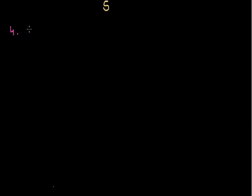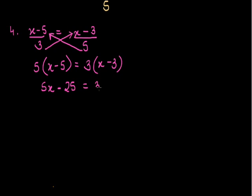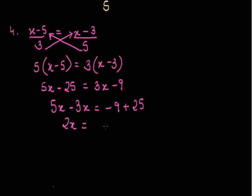The fourth question: x minus 5 upon 3 is equal to x minus 3 upon 5. Calculate the value of x in this question. Now what I can do is use cross multiplication — multiply 5 to the left hand side and 3 to the right hand side. So 5 into x minus 5 is equal to 3 into x minus 3. Solving: 5x minus 25 is equal to 3x minus 9. Variables on one side: 5x minus 3x is equal to minus 9 plus 25, so 2x is equal to 16. Dividing 2 on both sides, x is equal to 16 upon 2, that is equal to 8.